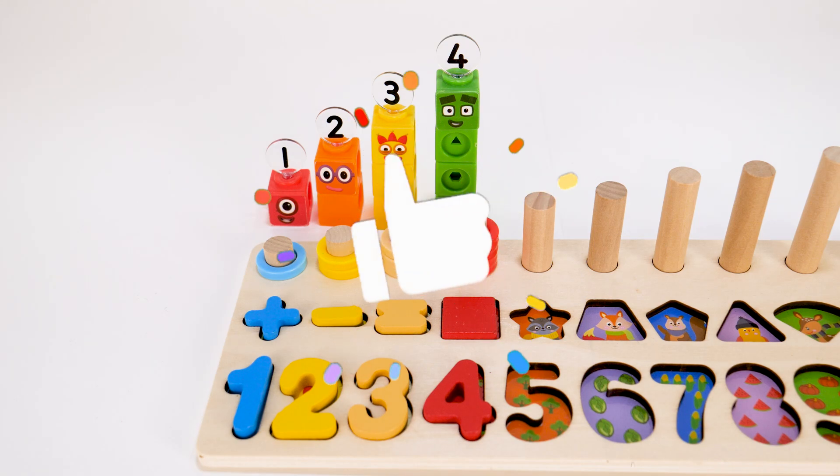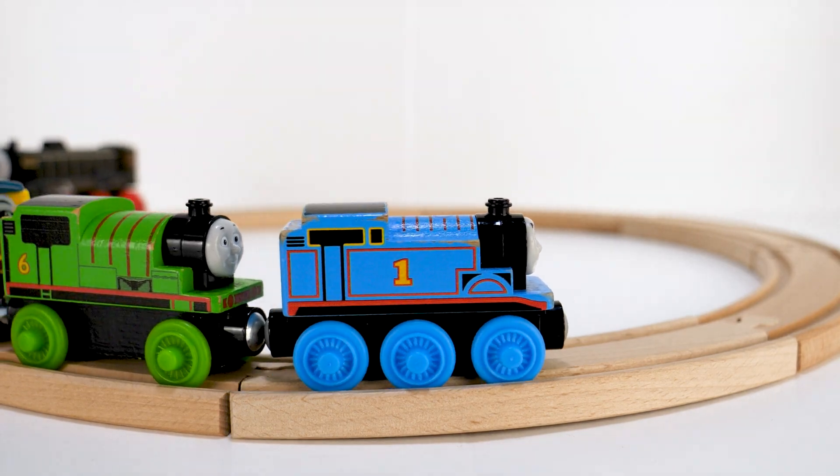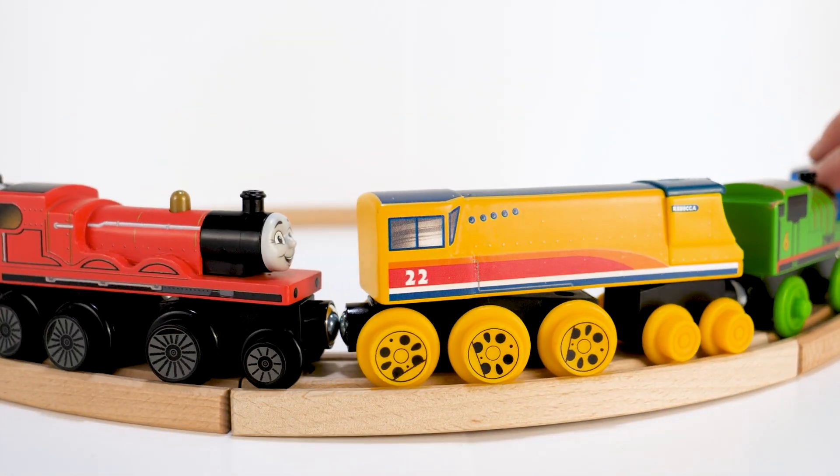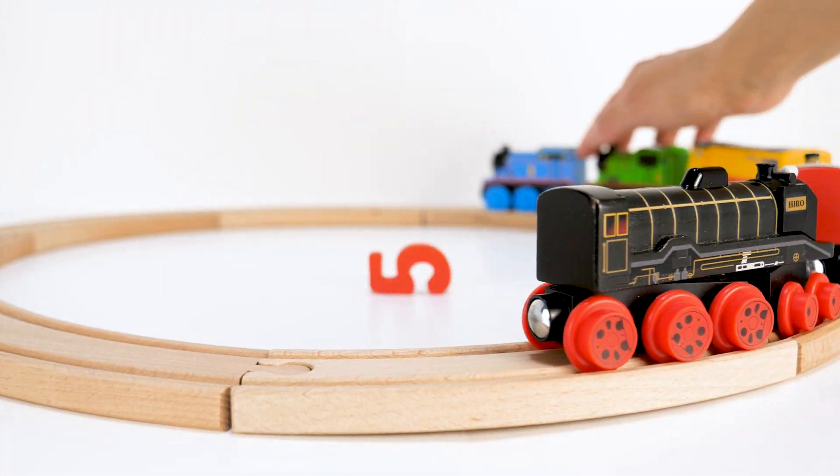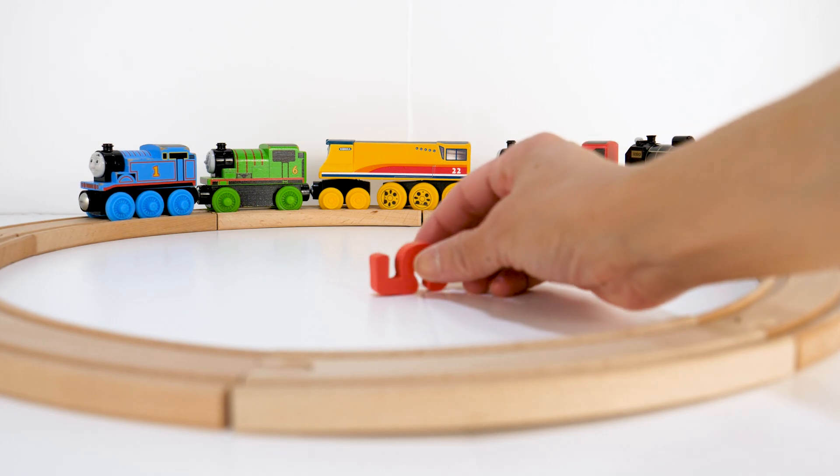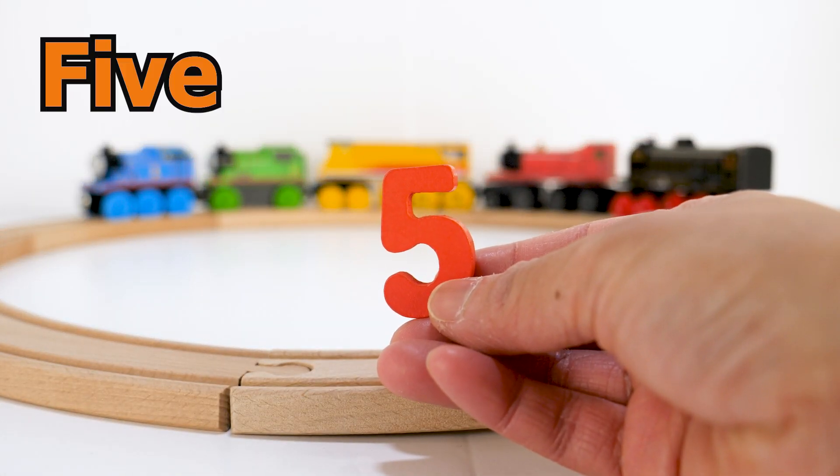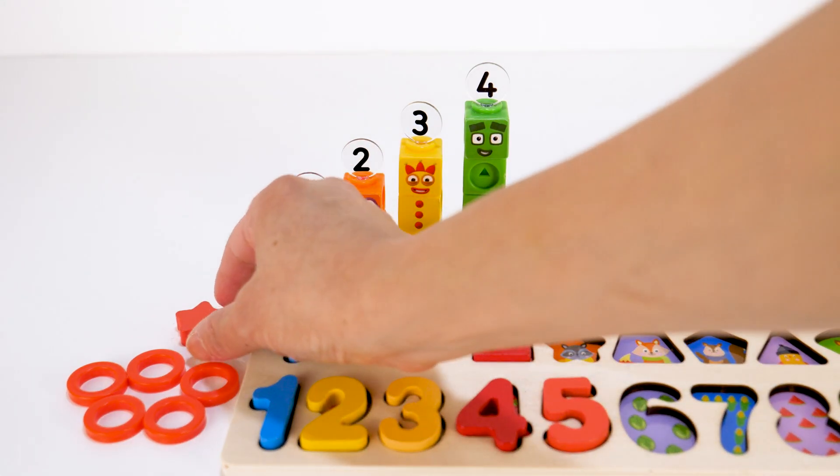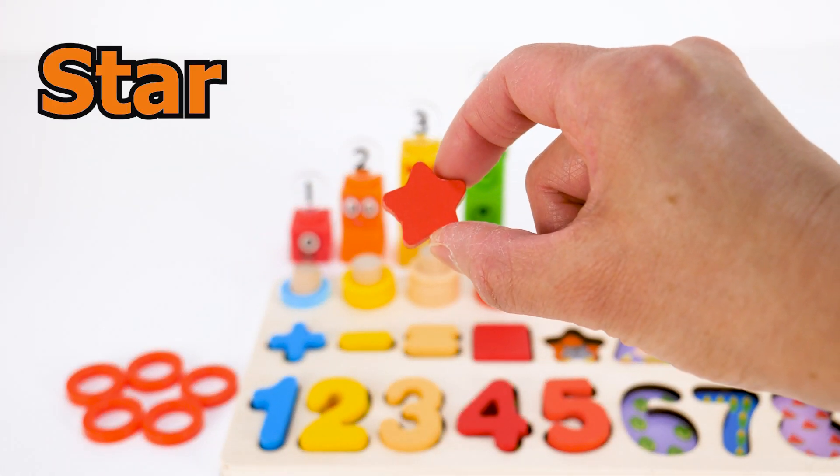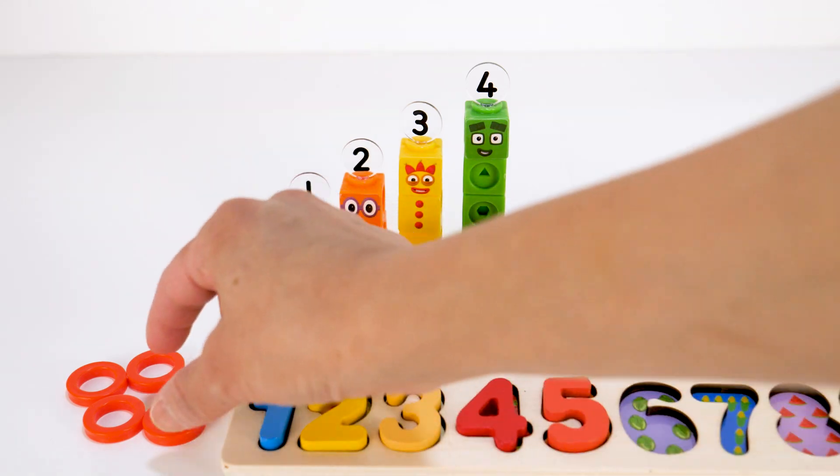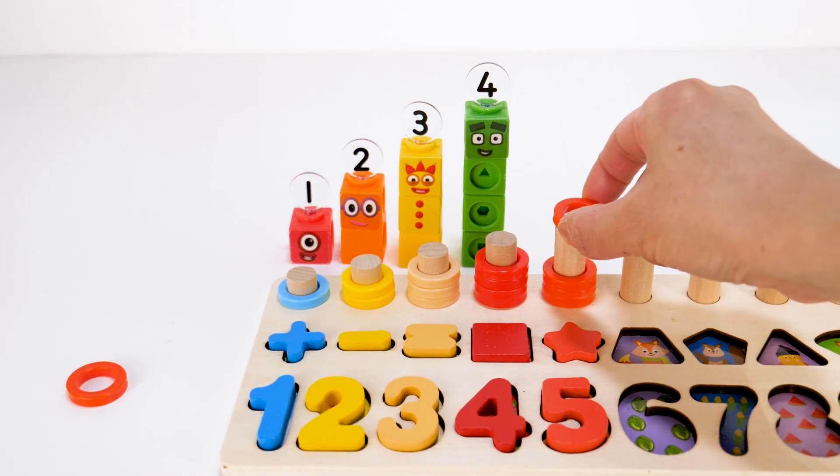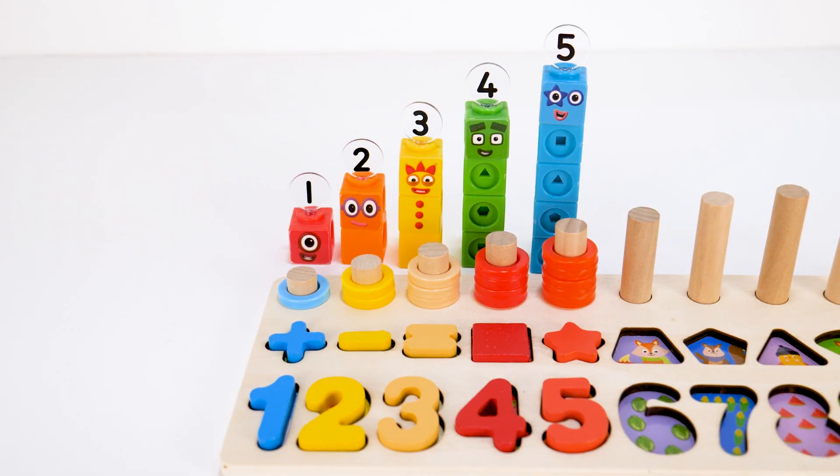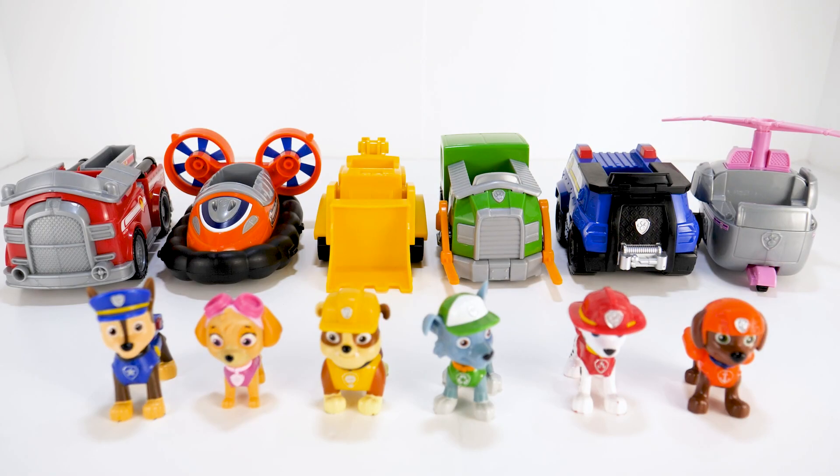Here come Thomas and friends. One, two, three, four, five. We got a puzzle piece, it's the number five. Star. One, two, three, four, five. Hello, number block five.